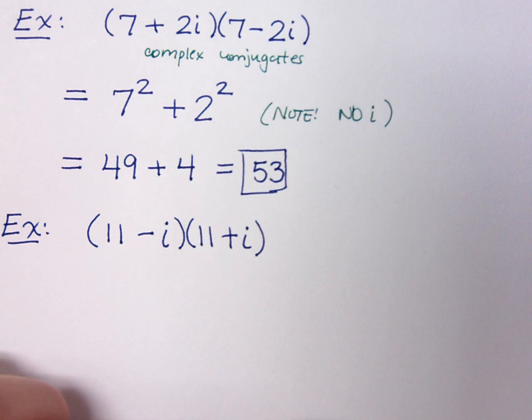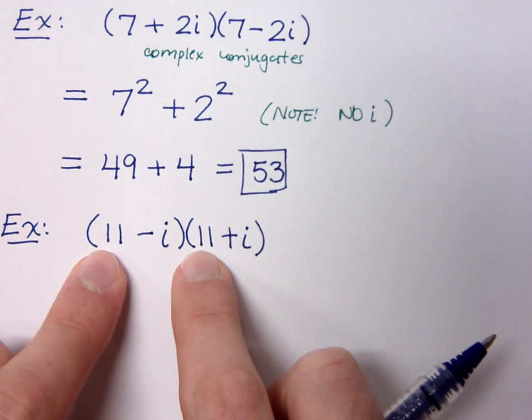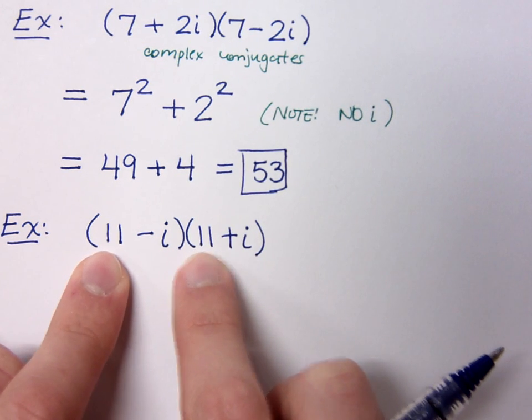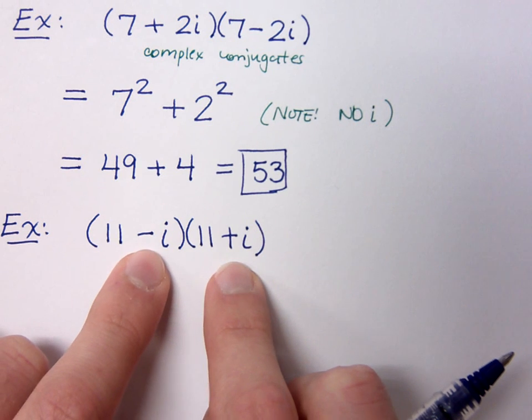You can see that these guys are complex conjugates. The real parts are exactly the same, positive 11. The imaginary parts are opposites, a negative i and a positive i.